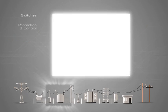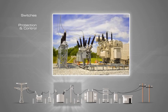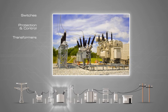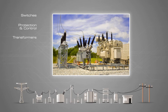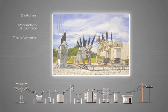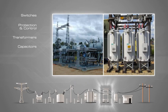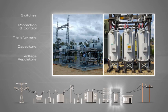Substations generally have switching, protection, and control equipment, and transformers. In a large substation, circuit breakers are used to interrupt any short circuits or overload currents that may occur on the network. Substations themselves do not usually have generators, although a power plant may have a substation nearby. Other devices, such as capacitors and voltage regulators, may also be located at a substation.